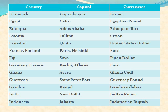Germany: its capital is Berlin and currency is Euro. Greece: its capital is Athens and currency is Euro. Ghana: capital is Accra and currency is Ghanaian Cedi.